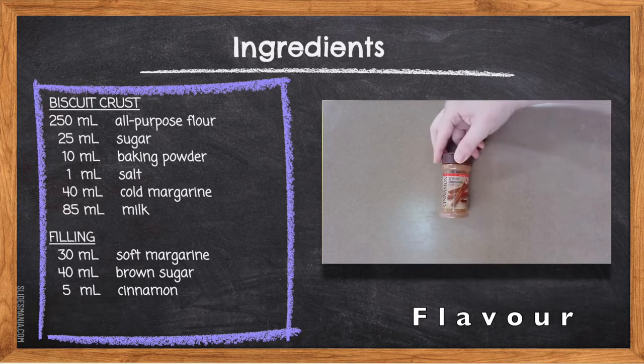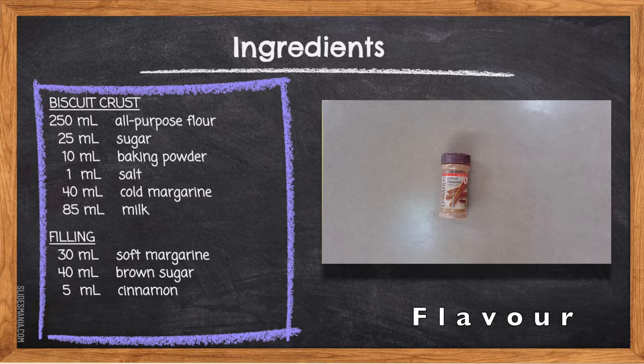5ml Cinnamon. Cinnamon is a dried spice that comes from the inner bark of a tree. It doesn't usually have a sweet taste, but tends to amplify the sweetness in other ingredients and adds a depth of flavor to any recipe it's added to.